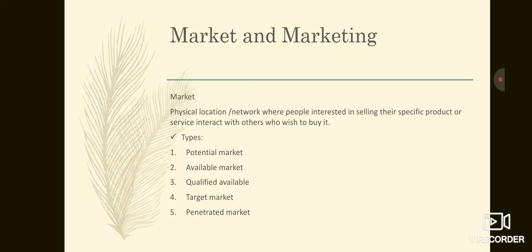The next one is qualified available market. Qualified available market includes those in the available market who are legally permitted to buy the product. For example, if I am going to a liquor shop, I am interested so I belong to the potential market. But if I don't have a license to run a liquor shop, I won't be in the qualified available market. However, if I get a license to run a liquor shop, I will belong to the qualified available market.